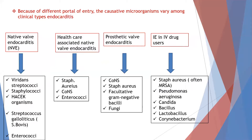Because of different portals of entry, causative microorganisms vary by type of endocarditis. Healthcare-associated native valve endocarditis is primarily caused by Staph aureus, followed by coagulase-negative staphylococci and enterococci. For prosthetic valve endocarditis, coagulase-negative staphylococci are the main organisms. In IV drug users, the number one cause is Staphylococcus aureus — often MRSA — but Pseudomonas, Candida, Bacillus, and Corynebacterium can also be seen.